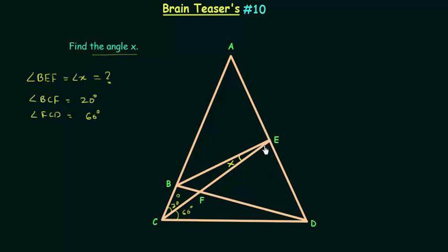Angle EDF is equal to 50 degrees. Angle FDC is equal to 30 degrees. This angle is equal to 30 degrees. And by using this information we have to find out angle BEF which is angle x.